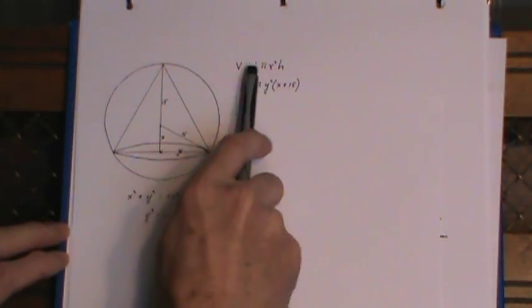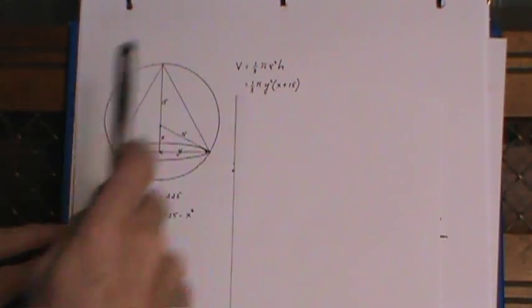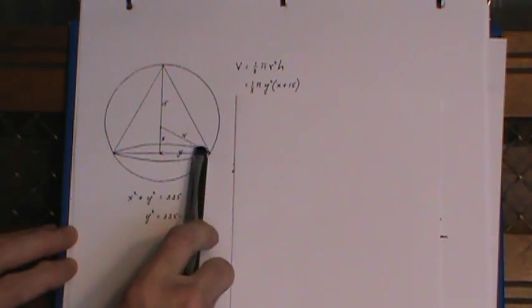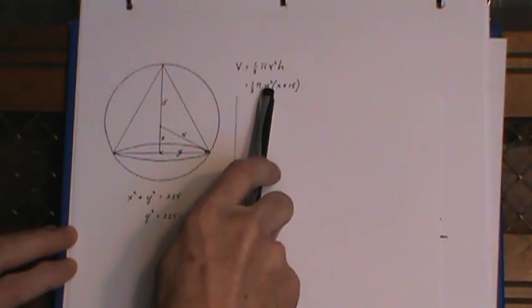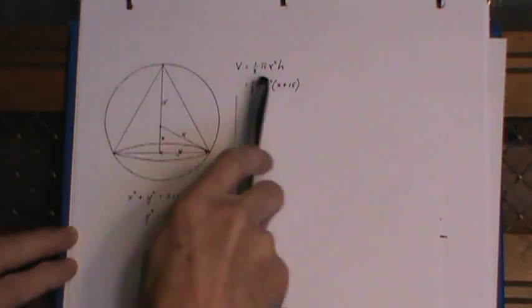So the cone formula for volume of a cone is one-third pi r squared h. The y is the radius of the cone so I'm just putting a y squared in there and the height of the cone is x plus 15.